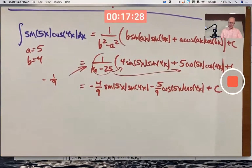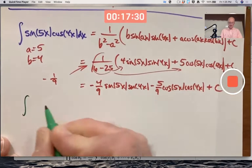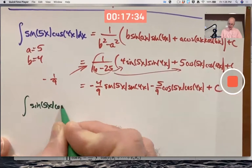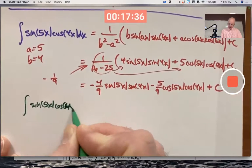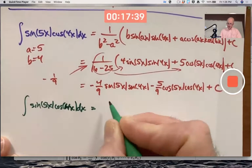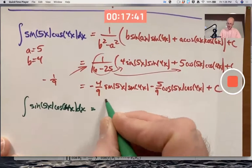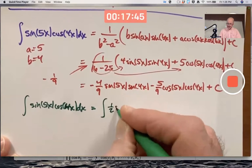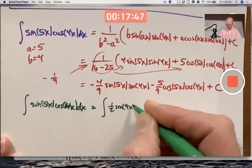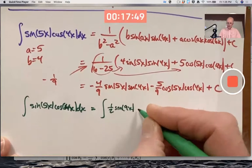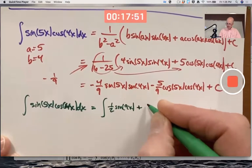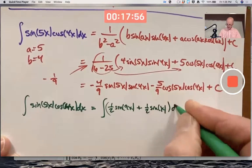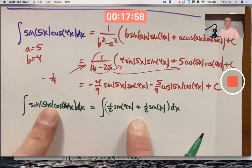If I believe that formula on Wikipedia, assuming nobody's been trying to trick us on Wikipedia, I could replace sine 5x cos 4x with one half sine 9x. Was it plus? I think it was plus. Plus one half sine x.